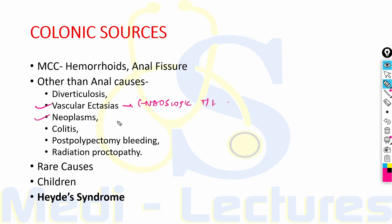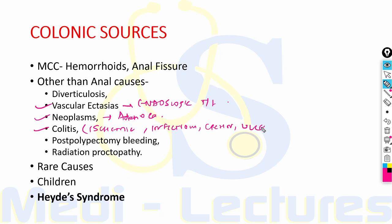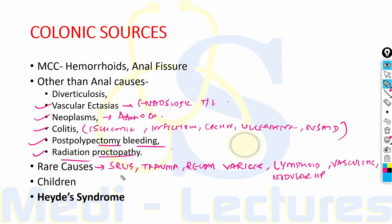Colonic neoplasm, primarily adenocarcinoma, can cause bleeding. Colitis — including ischemic colitis, infectious colitis, Crohn's disease, ulcerative colitis, and NSAID-induced colitis — can also bleed. Other causes include post-polypectomy bleeding, radiation proctopathy, solitary rectal ulcer syndrome, trauma, rectal varices, lymphoid nodular hyperplasia, vasculitis, or aortocolic fistulas.